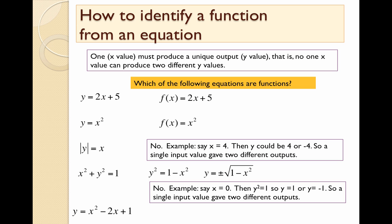Let's take a simple example. Say x is 0. What happens? Well, if x is 0, then you get plus or minus the square root of 1. So that's two different values for y. So one single input, x equals 0, gave us two different outputs.